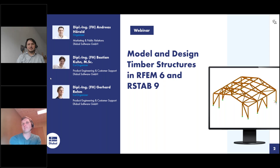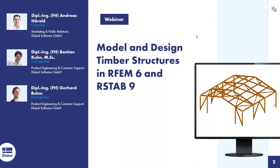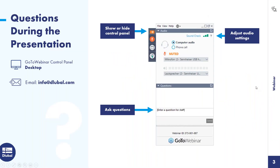We can close our webcams so that the attendees can see the full screen. You can ask questions during the webinar via the control panel on the right side of your screen. You can show or hide it with the arrow. If you don't get an answer during the webinar because there are too many questions, you will get an email after the webinar. Alternatively, watch the entire webinar and then email your questions to info@dlubal.com.